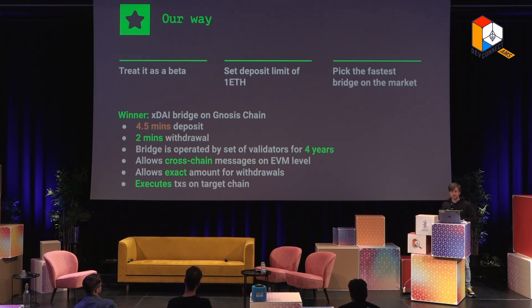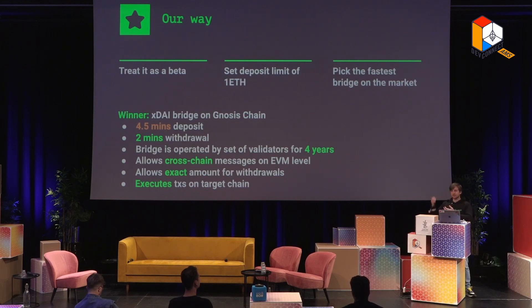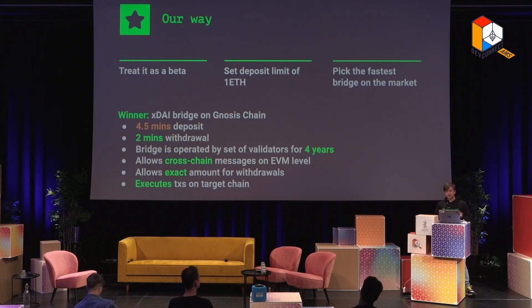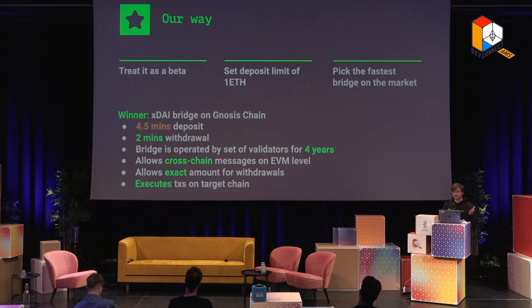And last but not least, it executes transactions on the target chain. When you deposit from L1 to L2, usually you have to claim on the other side. Similarly, when withdrawing from L2 to L1, bridges usually give you a button to claim your tokens on the other side because no one wants to pay L1 fees. With this bridge, it happens automatically.